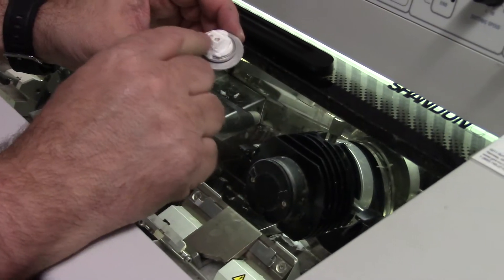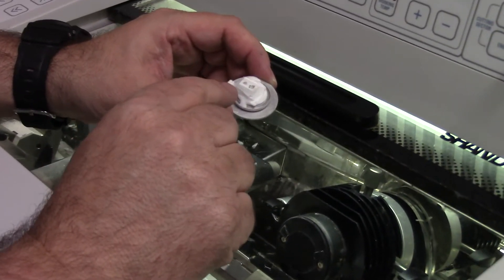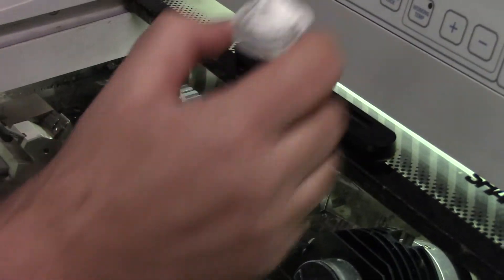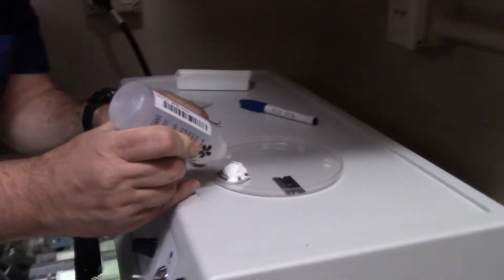Now what I want to do is make sure that this doesn't dehydrate as I put it in the freezer for however long until we finish sectioning. So what I'm going to do is grab the OCT from the fridge. Always good to have the OCT in the fridge.